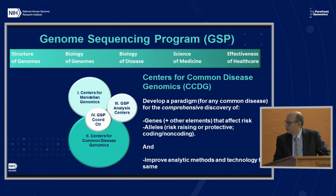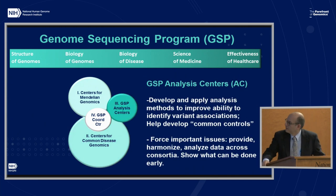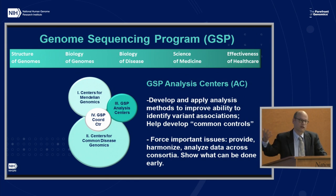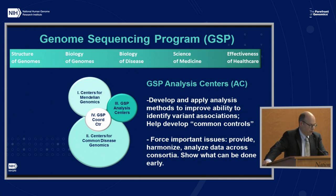The Centers for Common Disease Genomics, or CCDGs, whose aim is to develop a paradigm for any common disease for the comprehensive discovery of genes and other elements that affect risk — both risk-raising and protective, coding and non-coding. They also have an aim to improve analytic methods and technology. There are also GSP analysis centers. Most of today's talk will be about the first two components, but the GSP analysis centers aim to develop and apply analysis methods to improve our ability to identify variant associations and help develop a set of common controls.